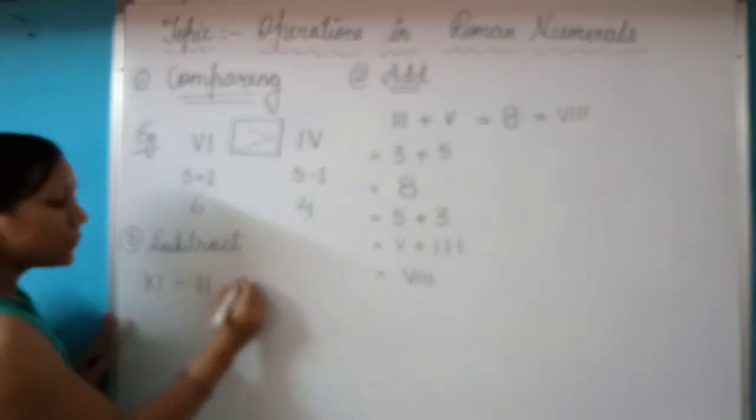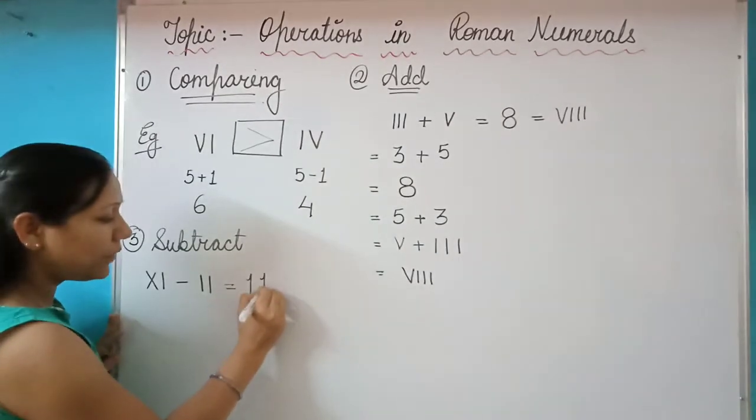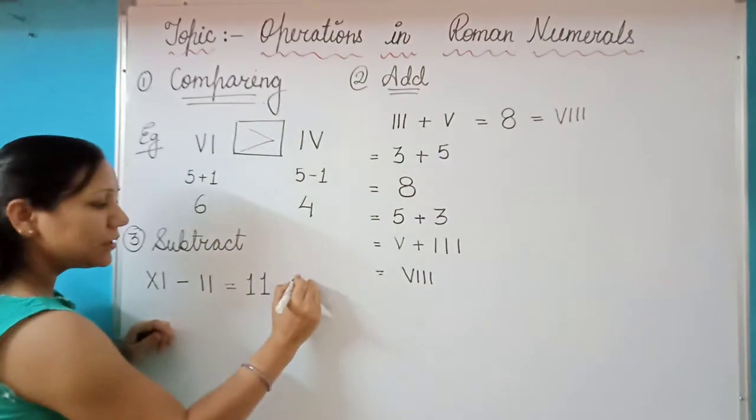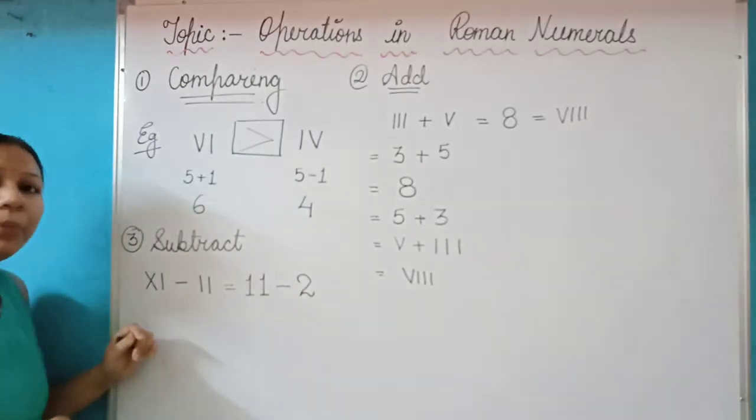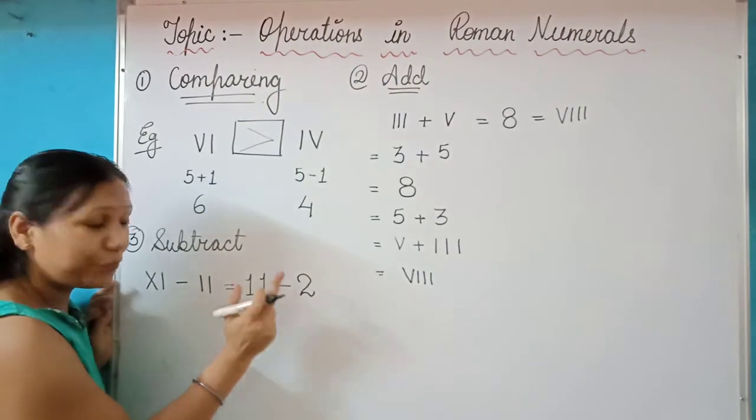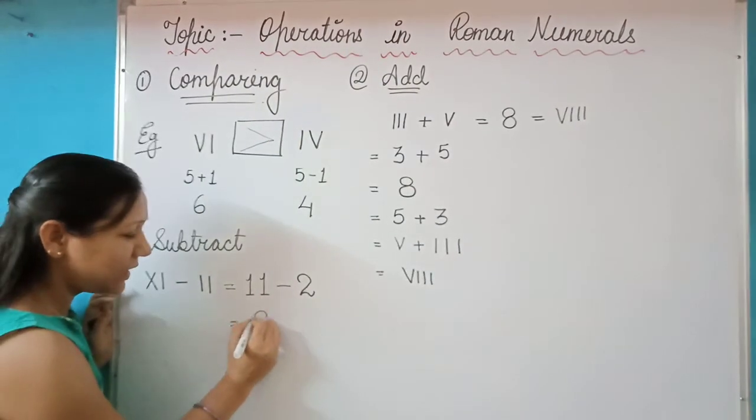So, 10 plus 1, this number represents 11 minus the symbol for II. This represents digit number 2. What is the value of 11 minus 2? Yes students, the answer is 9.